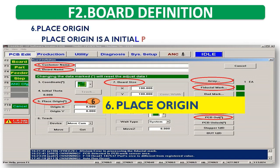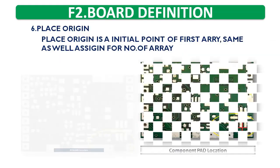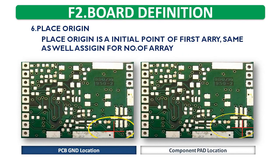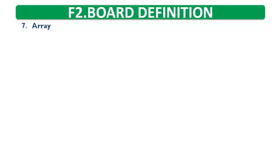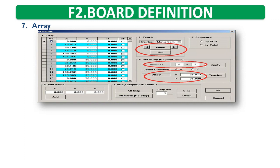Sixth, place origin — the place origin is the initial point of the first array, same as well as a sign for number of arrays. Seven: Array. Note: the first array should always be the same as place origin X, Y position.